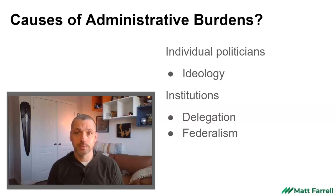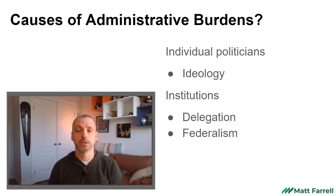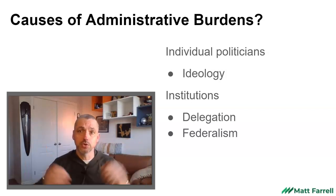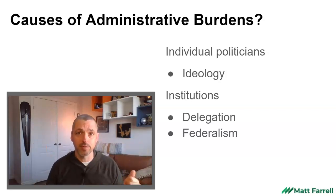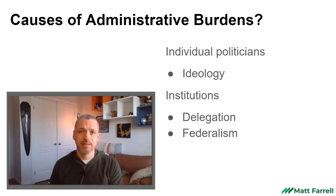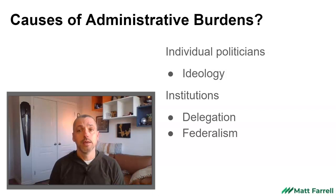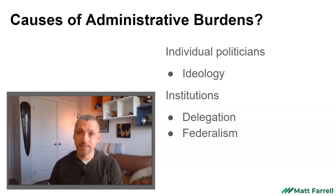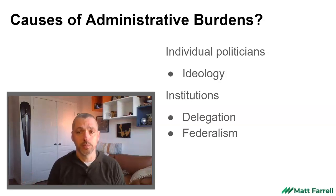It's also possible in federal systems where there's a difference in priorities between the national and sub-national units. Consider countries like Canada or the United States. The national government might be controlled by one political party with a given priority; they ask the provinces or states to do something, whereas those units' political priorities might differ — they might not want to do that. So if the national government says expand access to health care, the provinces or states might be forced to do that, yet they can impose some administrative burdens to try and reduce people from accessing the program.